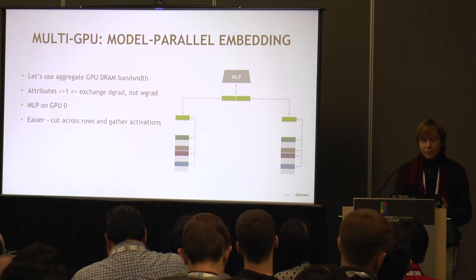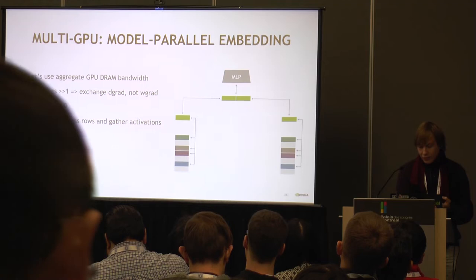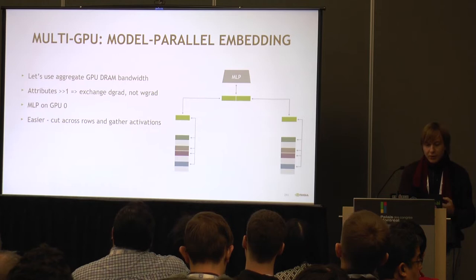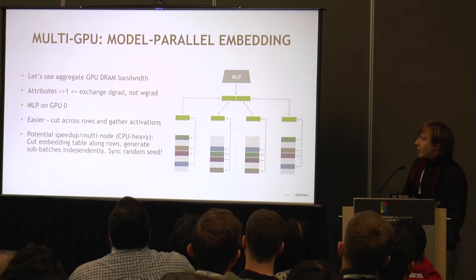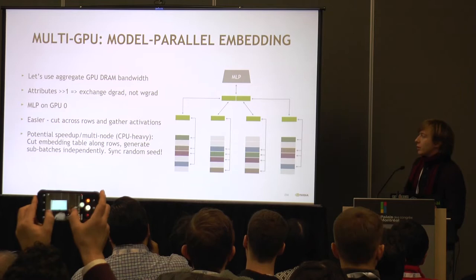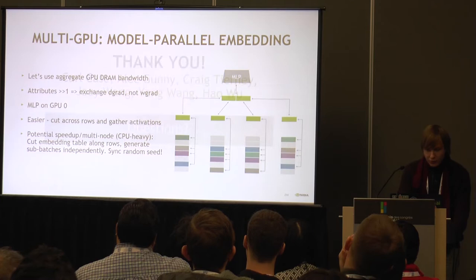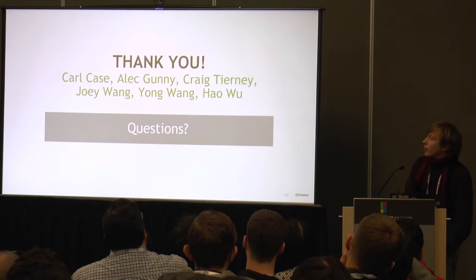The ratio is going to obviously be the size of how many vectors you're pooling. The easiest way to do that is to cut across rows of the embedding vector and gather activations. If you have a bit of time, you can cut across columns. There are a couple of extra things you need to do, but it's potentially a bigger speedup, and it's a bit more CPU heavy. So thank you to all the other engineers and architects who are working on it, and thank you for your attention.